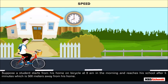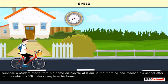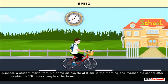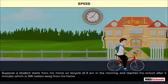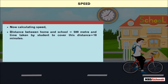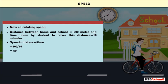Suppose a student starts from home on a bicycle at 8 a.m. and reaches school after 5 minutes; the school is 500 meters away. Calculating speed: distance equals 500 m, time equals 10 minutes. Speed equals distance divided by time, which equals 500 divided by 10, equals 50. So the speed of the student is 50 meters per minute.